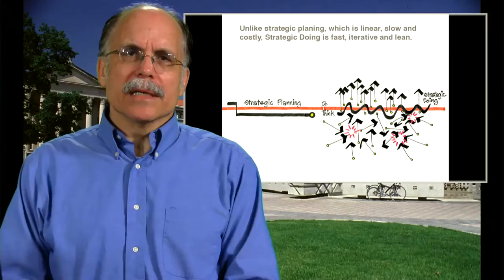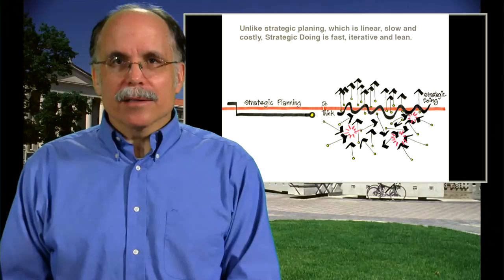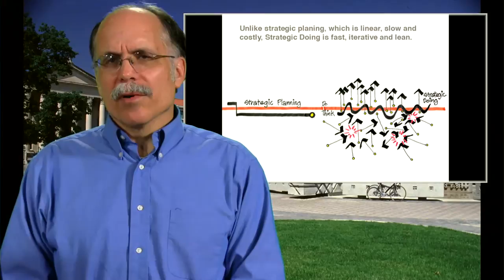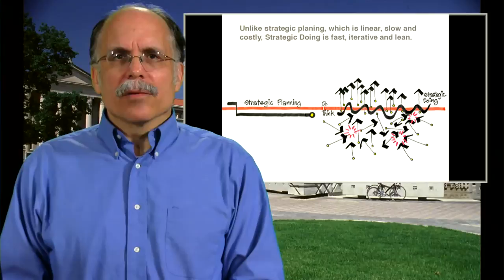So let me get into strategic doing and what that is. First, strategic doing is not strategic planning. Strategic planning developed in the late 1950s, early 1960s, as a way to manage hierarchical organizations, big top-down organizations. And it's a very linear process. We're all fairly familiar with strategic planning, where there's a lot of analysis, and then there's an action plan and hopefully something gets done.